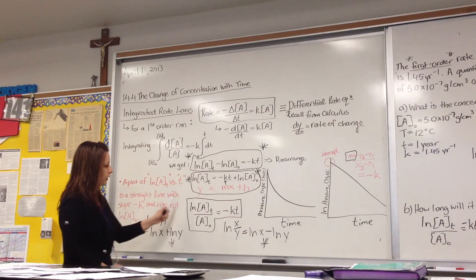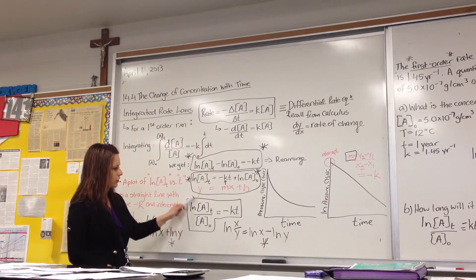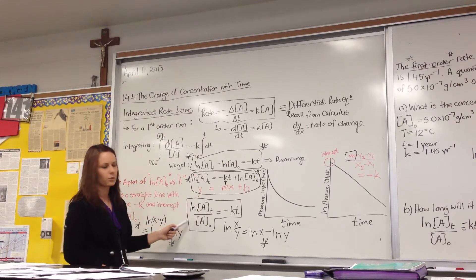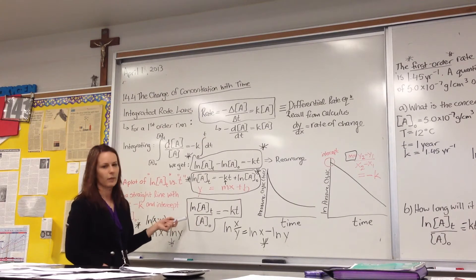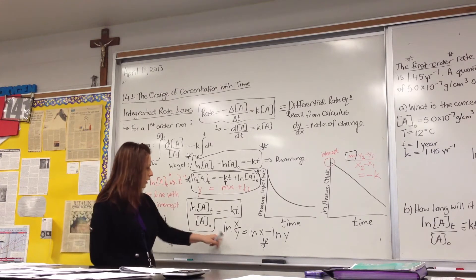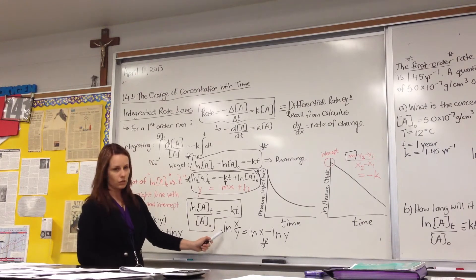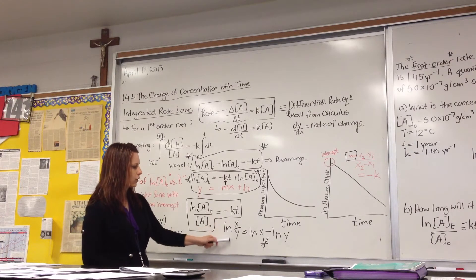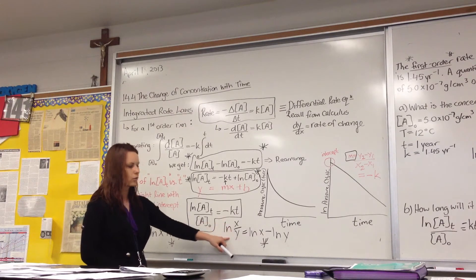So if we rearrange, we get the equation to look like this. Sometimes we end up rearranging based on easier math operators to get the right answer. So if you recall the laws of ln and the laws of logarithms, anytime you have a quotient, for instance, X over Y.